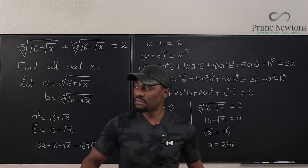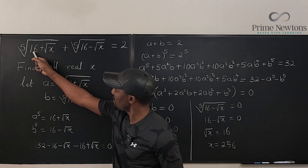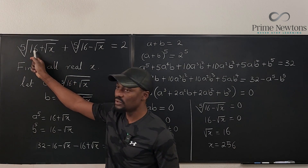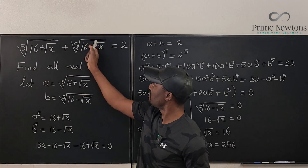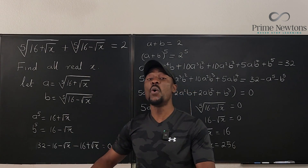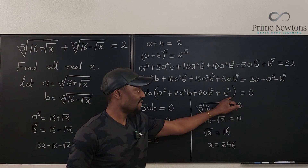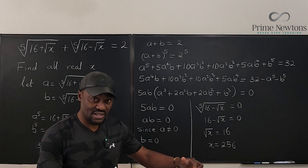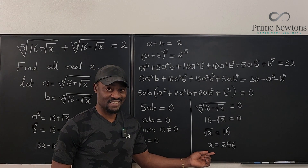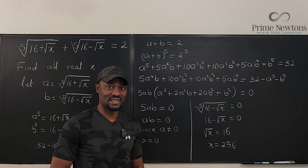If we plug in x = 256, we get the fifth root of (16 + 16) = fifth root of 32 = 2, and the other term becomes zero, confirming the answer is 2. That is the only real solution. Never stop learning — those who stop learning stop living. Bye-bye!